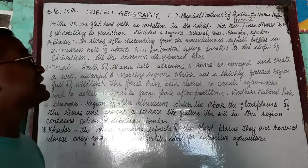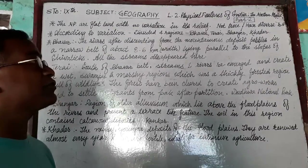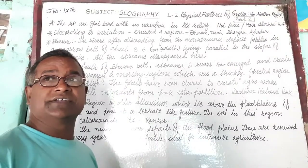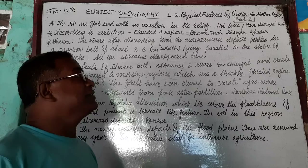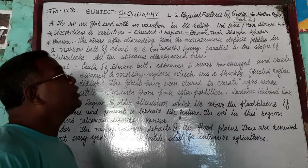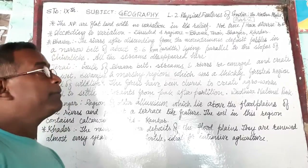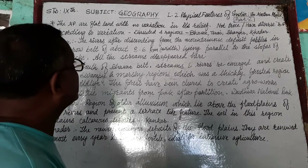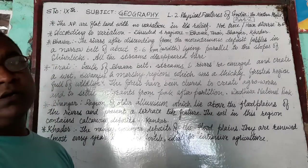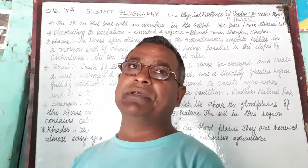In this video, we will concern over the Northern Plain, which is part of the physical features of India. The first division was the Northern Mountain Ranges, and the second division is the Northern Plain. In this video, we will discuss the remaining part of the Northern Plain. There are four divisions of the Northern Plain.